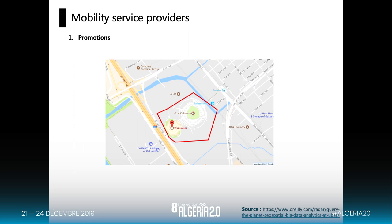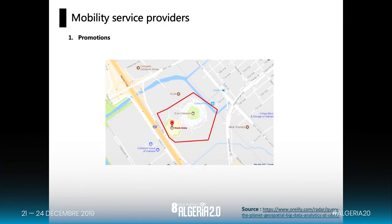We can use mobility service provider applications like Hitch, Yassir, or Temtem among others for promotions. Uber is an example that uses spatial data science to determine which people should receive promo codes or promotions. These techniques can be applied similarly in Algeria.